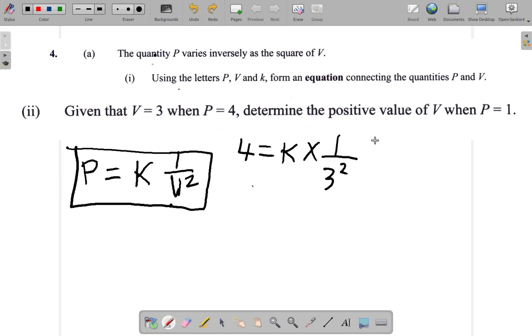Then, when we know what K is, we could put P as 1, we know K, and we'd have only one unknown, which is V. So we would find V. And they say determine the positive value of V. So, let's go ahead.